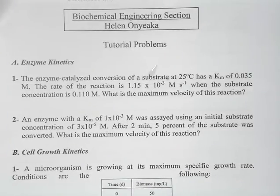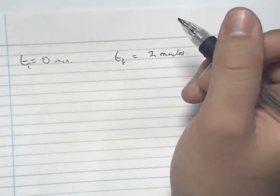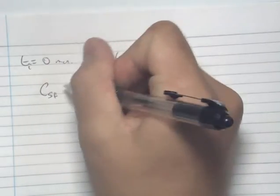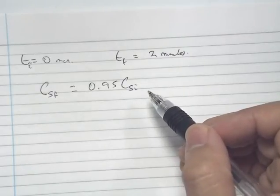Question 2 gives us a reaction and asks us to find the maximum velocity, which occurs over 2 minutes, with 5% of the substrate converted. From that we can deduce our initial boundary conditions: Ti is 0 minutes, Tf is 2 minutes, and our final substrate concentration CSf is equal to 0.95 times the initial substrate concentration CSi.